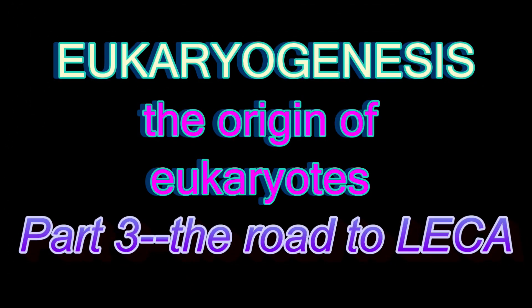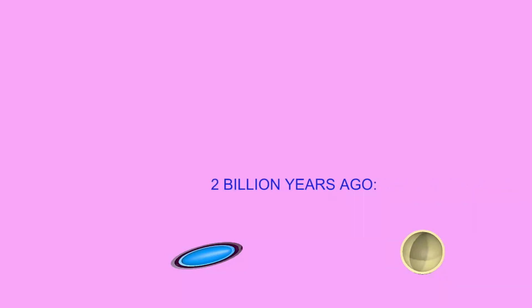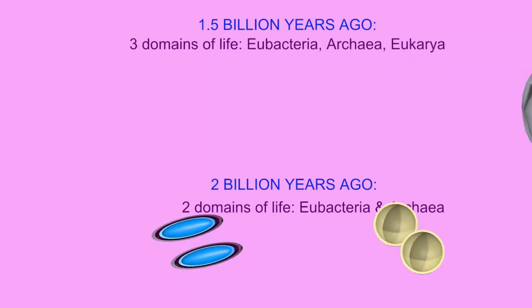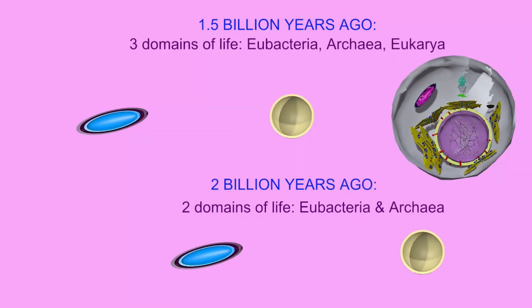Prior to two billion years ago, there were only two domains of living things: the eubacteria and the archaea. But somewhere in the time period of two billion years ago and one and a half billion years ago, a new domain of living things evolved — the eukaryotes.